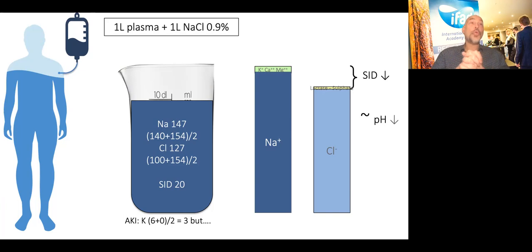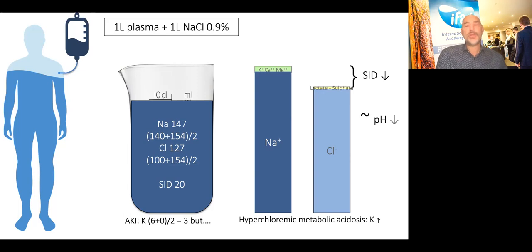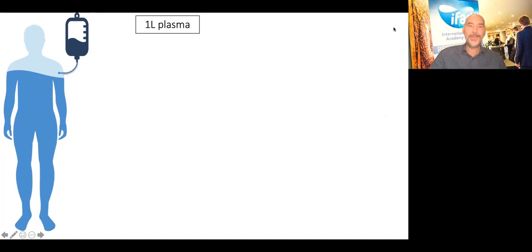Going back to the hypothetical patient with AKI and a potassium of 6: looking at the dilutional effect alone, 6 plus 0 divided by 2 equals 3. But at the same time, this patient develops hyperchloremic metabolic acidosis, which also induces an increase in potassium levels. So the final result is that potassium may even remain stable or actually increase in critically ill patients given normal saline.